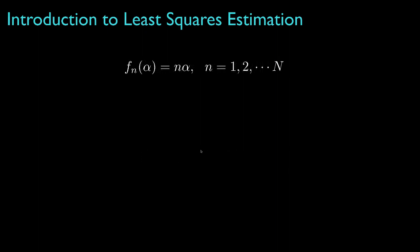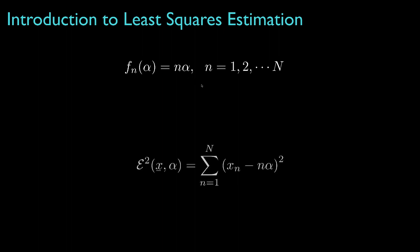As an example, let's look at a situation where the parameter is a single value, alpha, and the observation consists of capital N values, each of which is ideally specified by this simple function. That is, the first element of the observation function is equal to alpha, the second is 2 times alpha, the third is 3 times alpha, and in general the nth is n times alpha. The squared error then is the sum of the squares of the differences between the observed values and these predicted values.